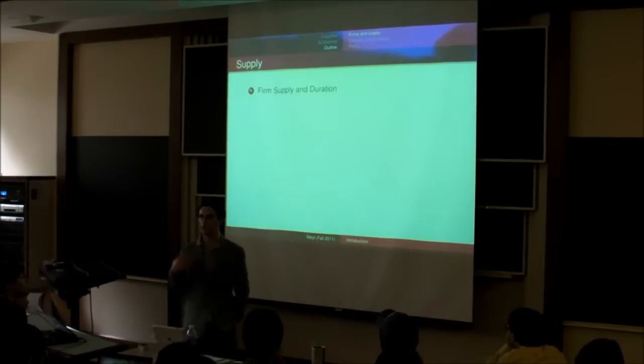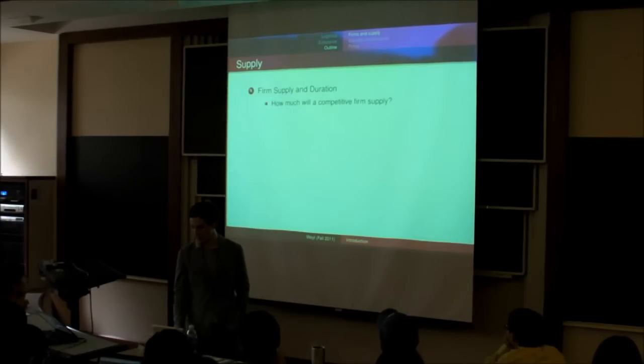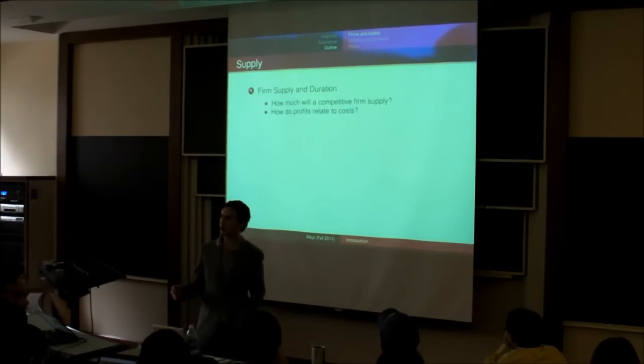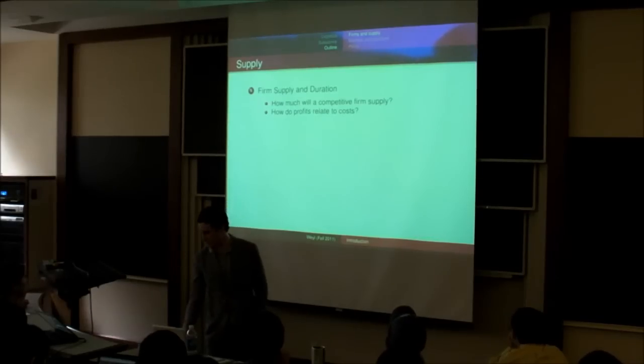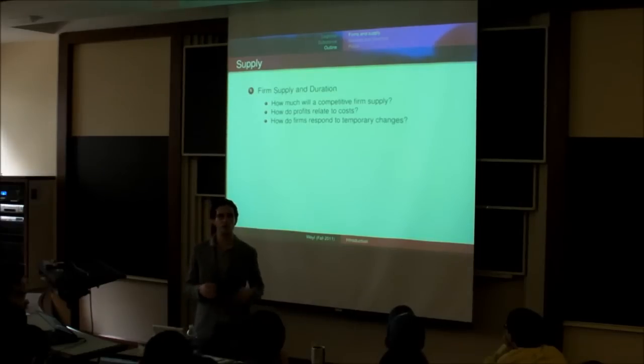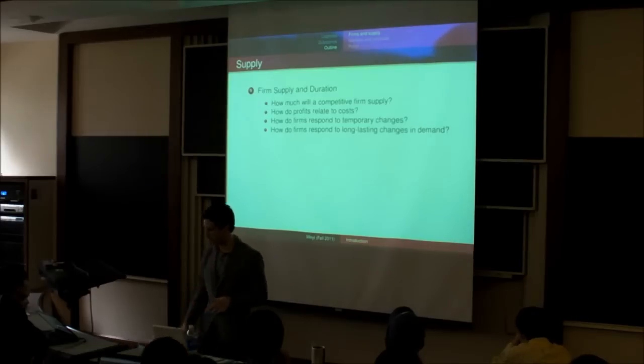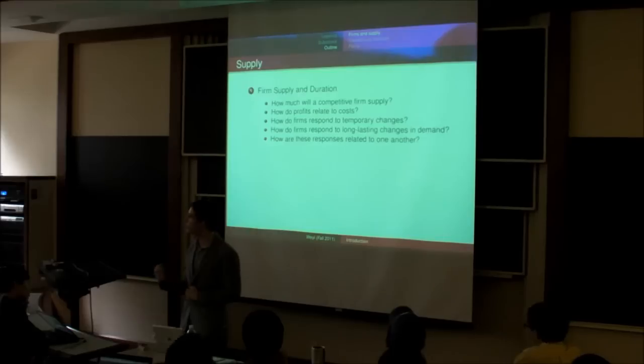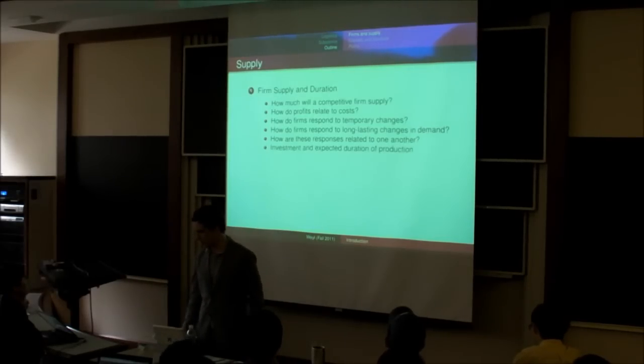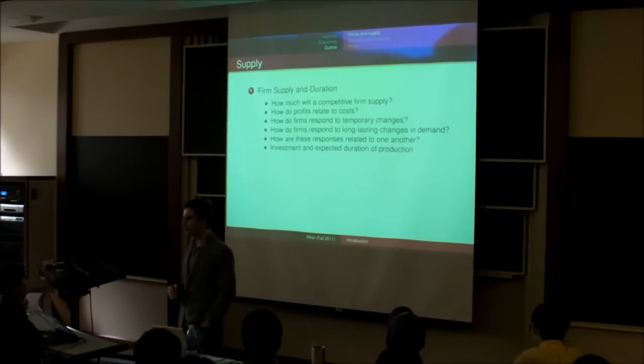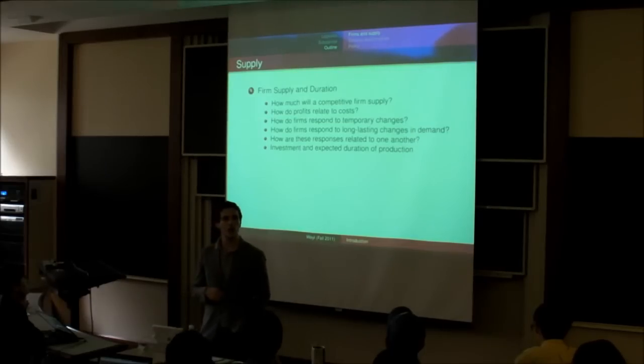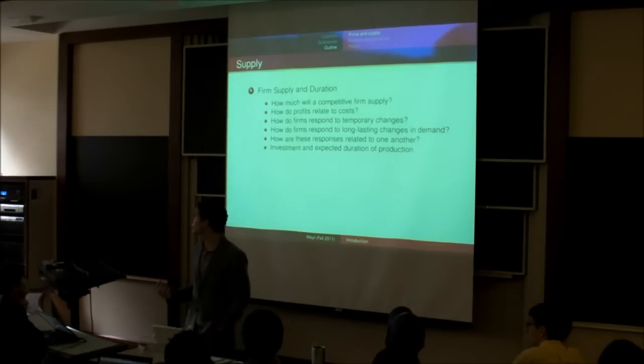We'll think about how much a firm, an individual firm, will supply to the market. If they're competitive, how their profits that they make are related to their cost function. How do they respond to short term changes in the demand for their product? And how does that compare to long term changes in the demand for their product? And how are these different types of responses related to one another? And how does it depend on what types of things the firm needs in order to produce its product?